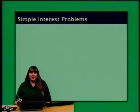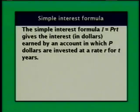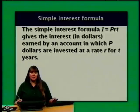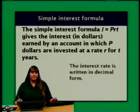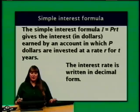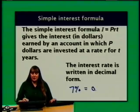In this part of the lesson, I'm going to talk about simple interest problems, starting with the simple interest formula and some application problems. The simple interest formula is I equals PRT, giving the interest in dollars earned when P dollars are invested at rate R for T years. The interest rate is applied only to the original principal P — as opposed to compound interest. The interest rate is written in decimal form, so 7% per year becomes 0.07.